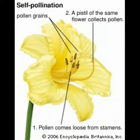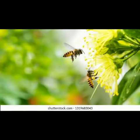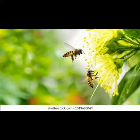When pollen grains are transferred from the anther to the stigma of the same flower, or to another flower of the same plant, that is called self-pollination. If the pollen grains are transferred from the anther of one flower to the stigma of another flower of the same kind, that is also called self-pollination.